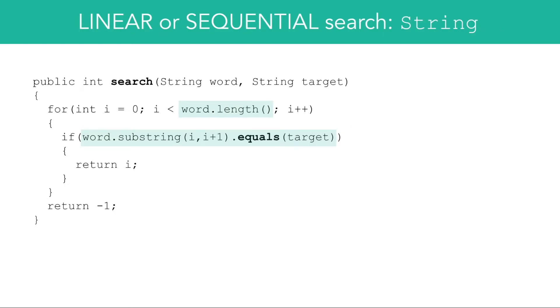Look at how to set up a sequential search of a character within a string. Notice the boundary and condition. To access one character within a string, you can use the substring method that takes in two parameters, index and index plus one. We then use the dot equals method to compare that letter within the string to the target letter.